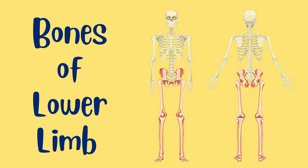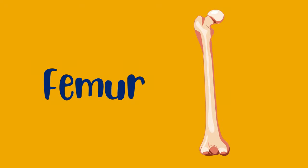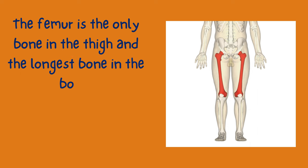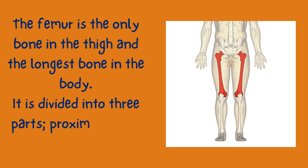Hello students. Today we are going to discuss another topic from anatomy — the bones of the lower limb. First we'll study about the femur bone. The femur is the only bone in the thigh and the longest bone in the body. It is divided into three parts: proximal, shaft, and distal.